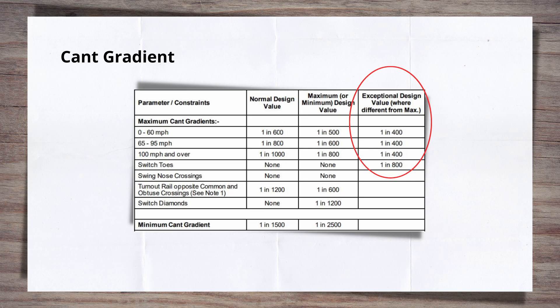Cant gradients need to be checked alongside other design variables, such as rate of change, when designing, so don't forget about them.